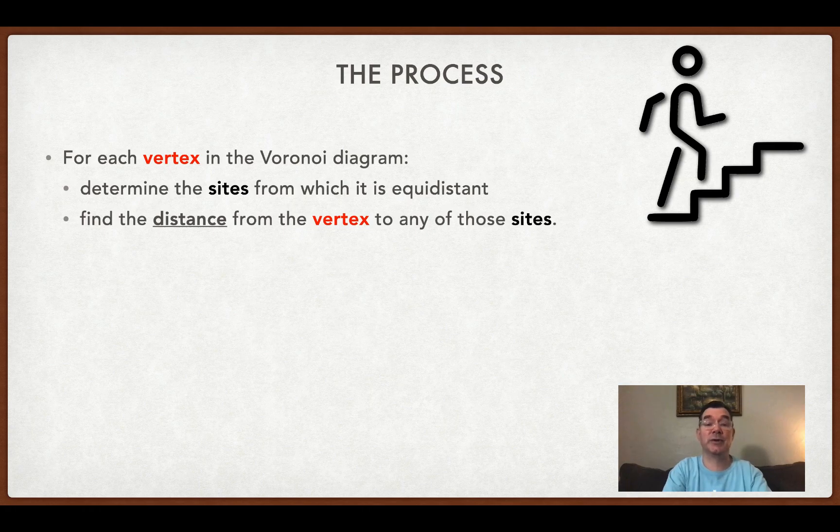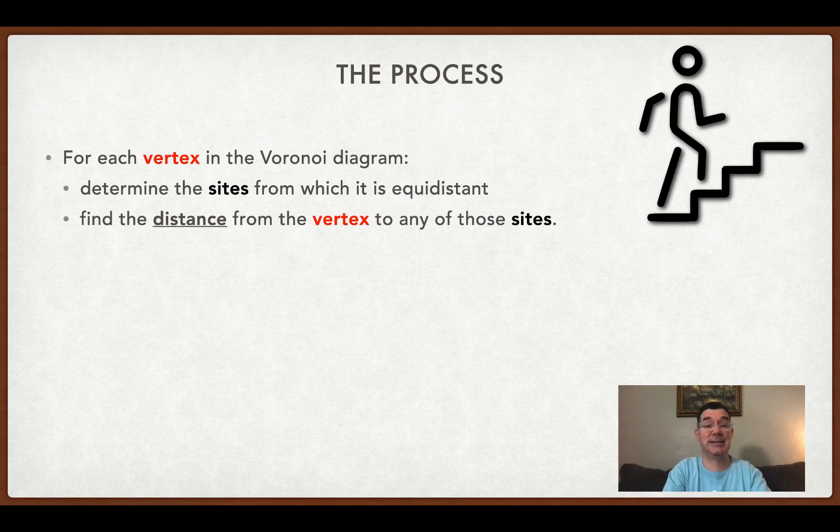We're going to find the distance from that vertex to any of those sites and it really doesn't matter because if it's equidistant, it's going to be the same distance from all three sites. So once we find the distance to one, then it's going to be the distance to the other two.